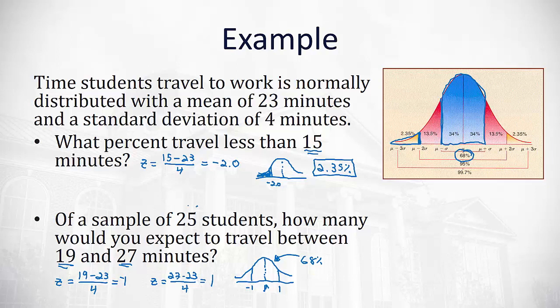However, we want to know of 25 students, how many is that going to be? So we'll take the 25 students and multiply by the 0.68 to see how many students we expect to travel within that time frame. That we get 17. So we would expect in a random sample of 25 students, 17 of them are traveling somewhere between 19 and 27 minutes.